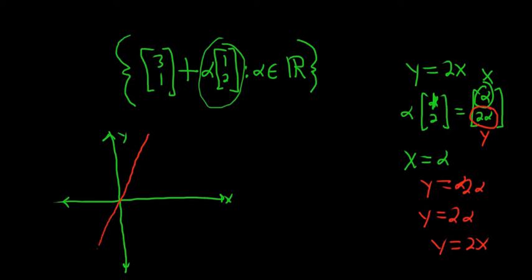So we're taking the line y equals 2x, and then we're adding a vector to it. So it's like we're translating the line y equals 2x by this vector (3,1). Let's just do a rough sketch.